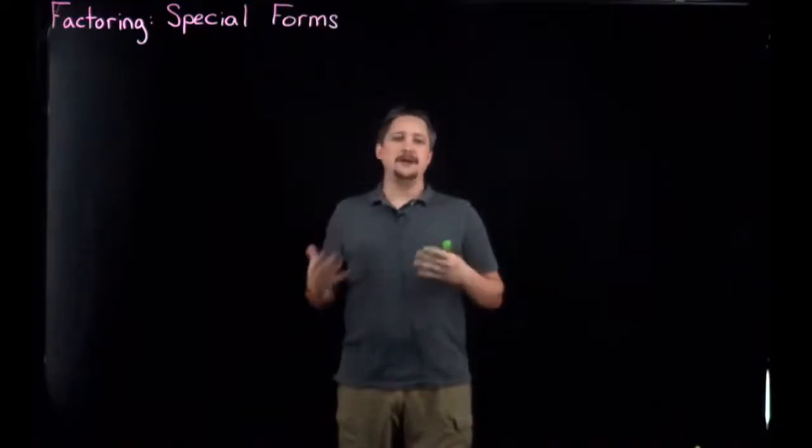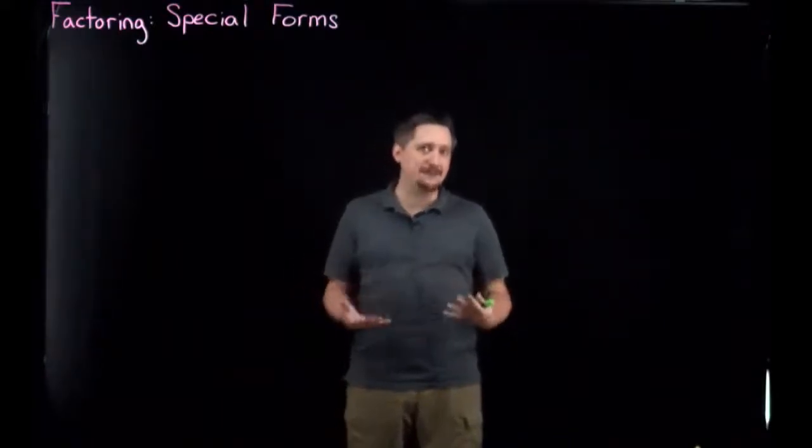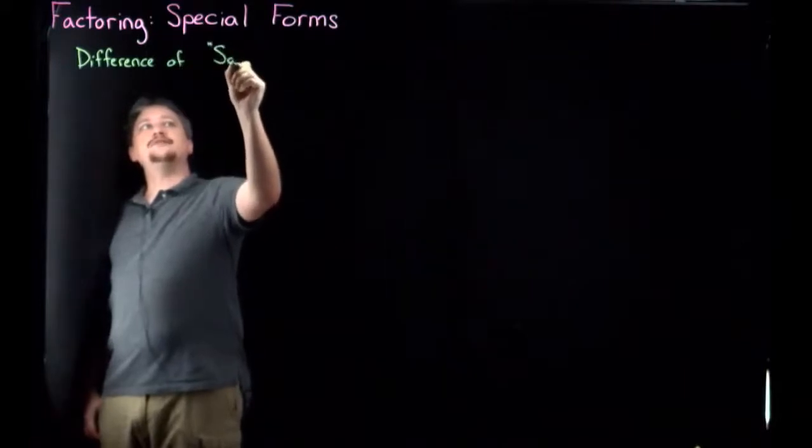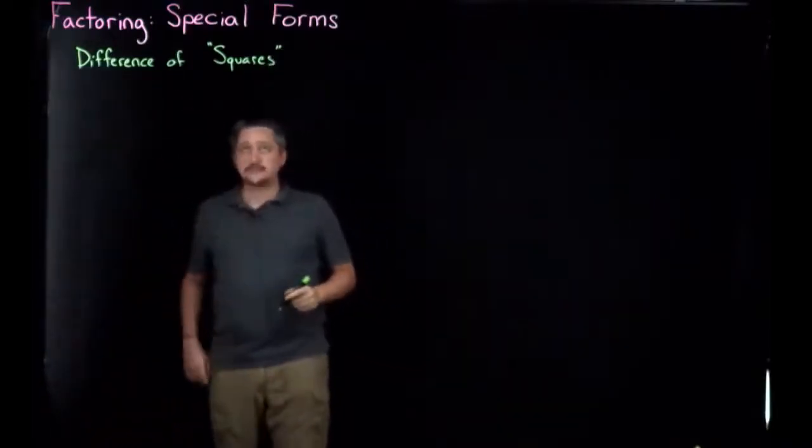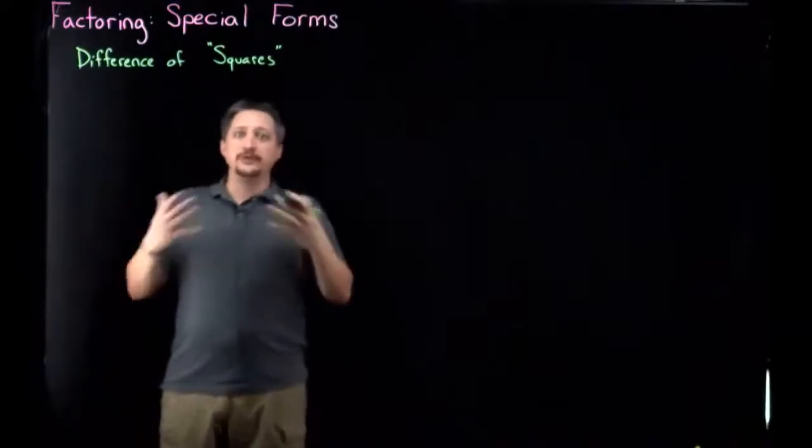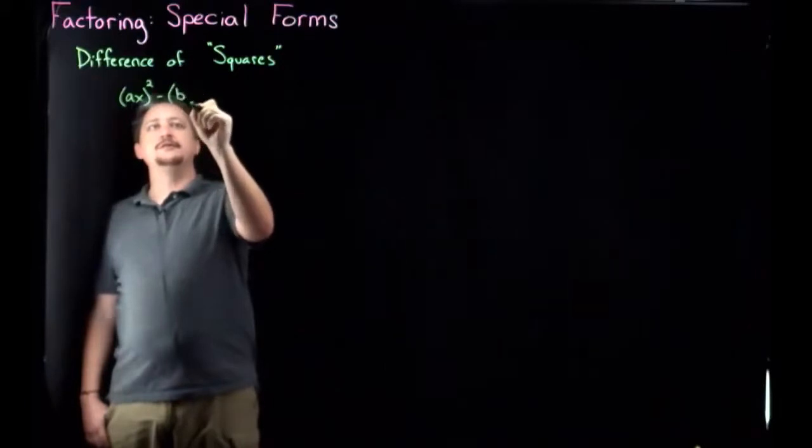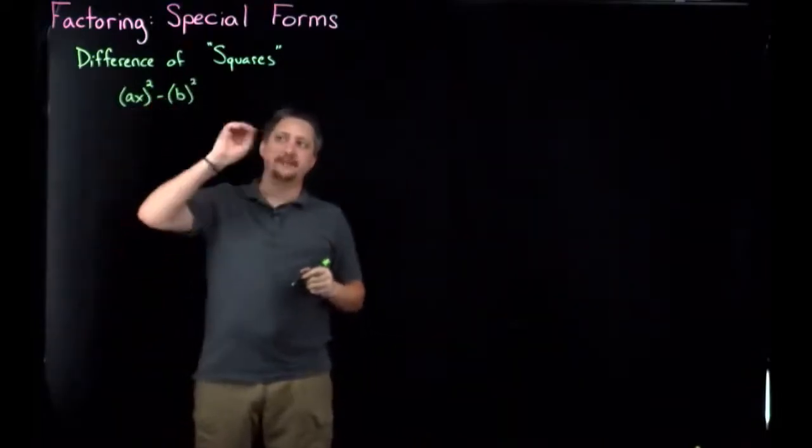And so it's common enough and easy enough to use these quick tricks that they're worth knowing so that you spend a lot less time factoring them. So there's two major ones we're gonna talk about. The first one is the Difference of Squares, and I'm putting this in quotes for a reason, which I will demonstrate as we go. So a Difference of Squares, the fundamental formula is if you have something like ax squared minus some other b squared. But really, we could have like by or something in there. So you have a thing squared minus another thing squared.